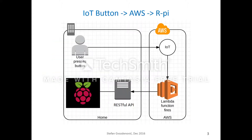Single-click turns the light on, double-click turns it off. These commands are sent over MQTT protocol to the AWS IoT, which triggers a Lambda function that controls the lights through an HTTP web page hosted on Raspberry Pi.